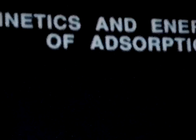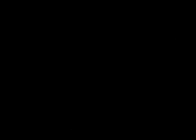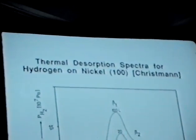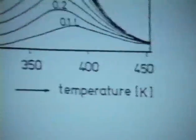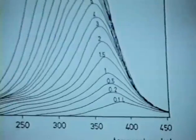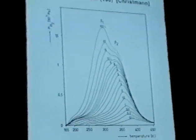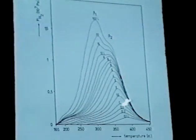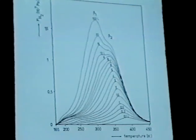First, the kinetics and energetics of adsorption, beginning with single crystal data. There is a thermal desorption spectrum for hydrogen on nickel (100) reported by Christman. What we see are the adsorption spectra as a function of coverage, plotted against temperature. Notice that there are two different adsorption states, and the beta-2 state is formed at relatively low coverages. As we get to higher coverages, we see the formation of a second state at lower temperatures and lower binding energies — the beta-1 state.